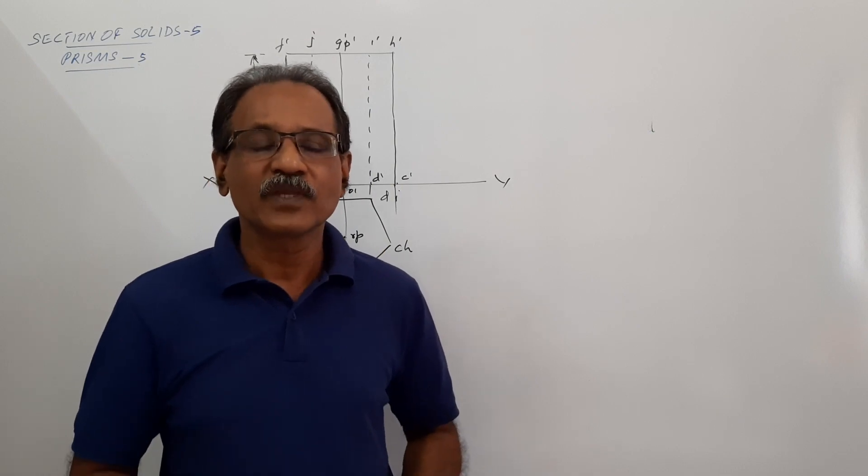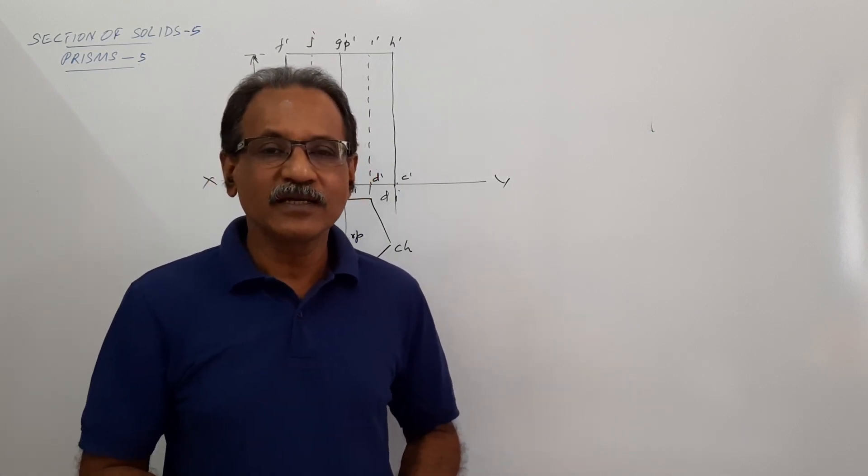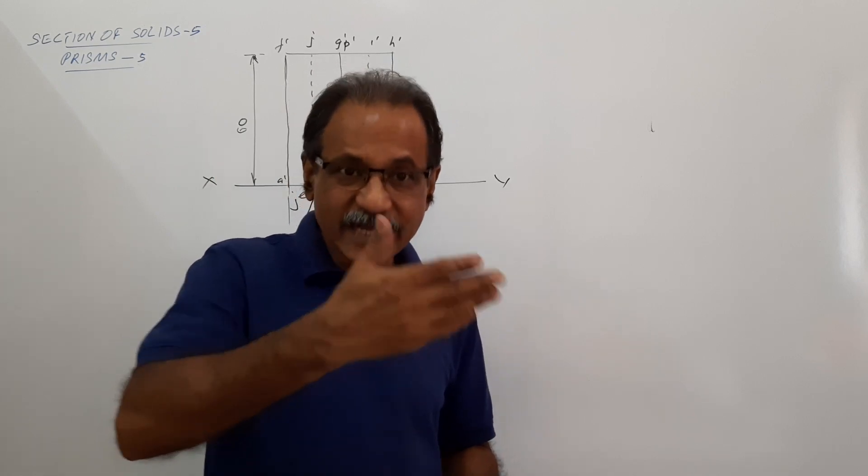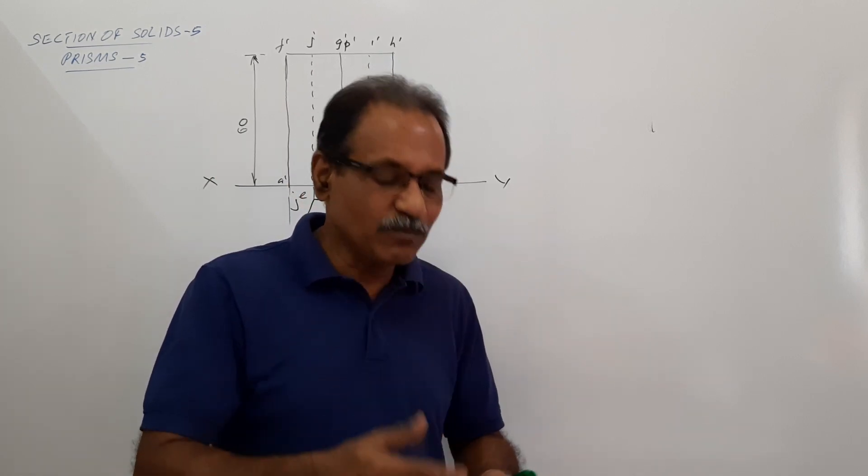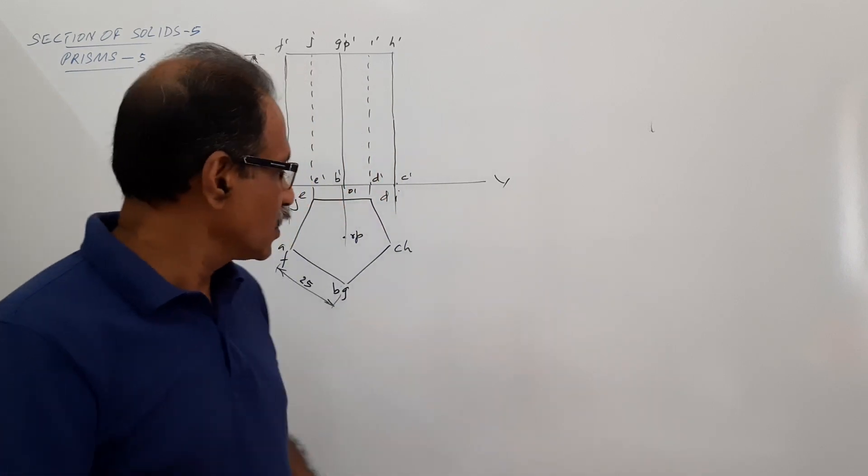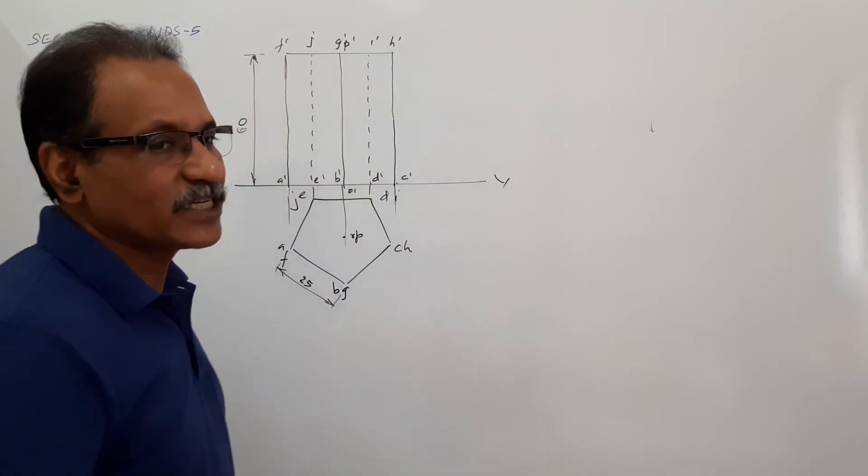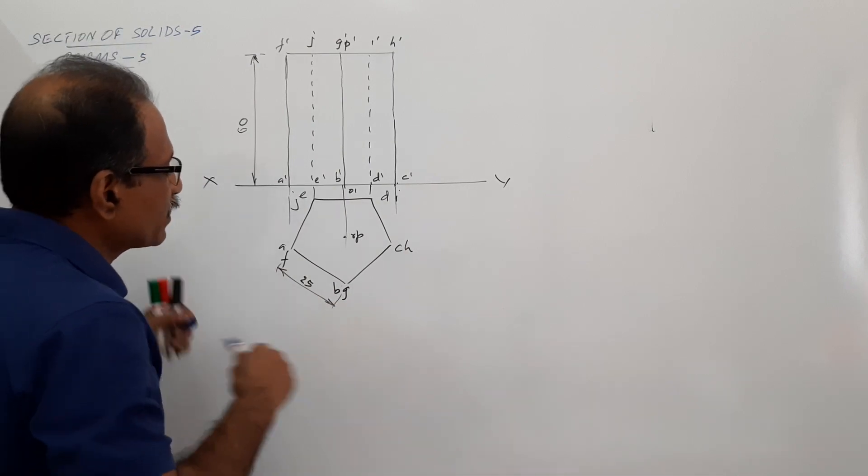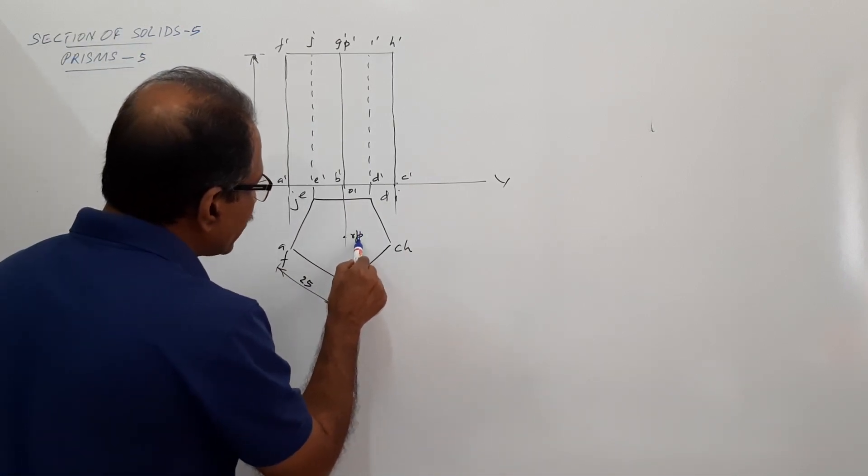This is cut by a cutting plane inclined at 50 degrees to VP, passing through 10mm away from the particular axis. I have drawn the planar derivation, I have marked the dimensions 25-60. Now 10mm radius, draw an arc.